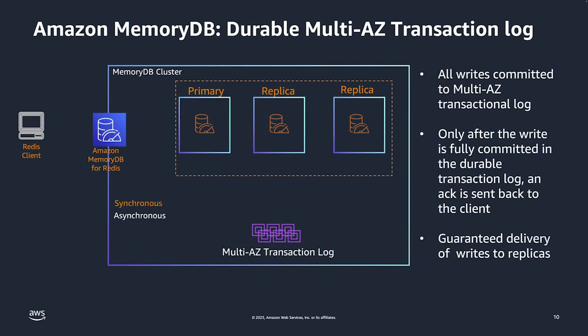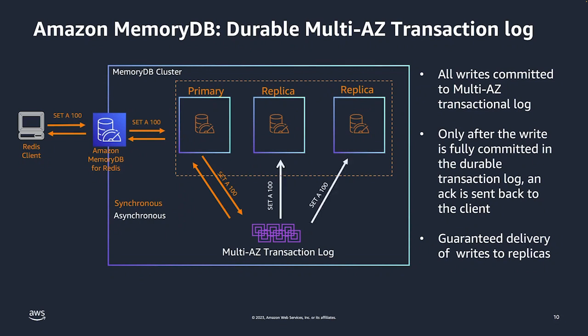Diving deeper into how the durability works — if you're asking yourself how an in-memory data store can be durable at the same time, we invested in creating a feature called the multi-AZ transaction log. We decouple the Redis engine from the durability. Your Redis commands come from a Redis client to our MemoryDB for Redis cluster, which has one primary and two replicas. Data goes to the primary node and synchronously is sent to the multi-AZ transaction log. Once it has been replicated into multiple AZs, we get an acknowledgment back to the client. Then the transaction log also provides replication to the replica nodes for highly available clusters.